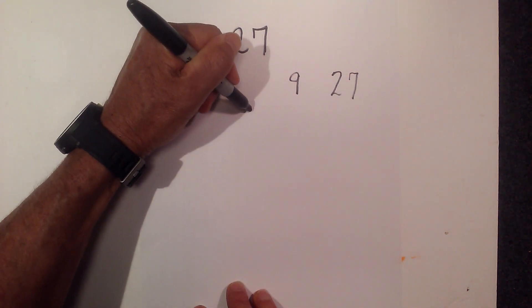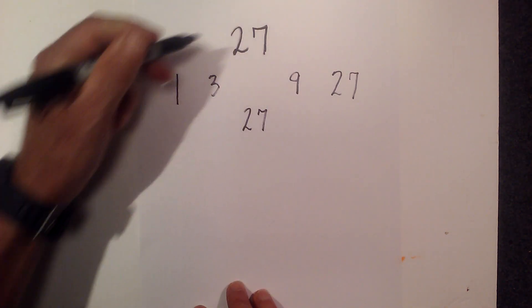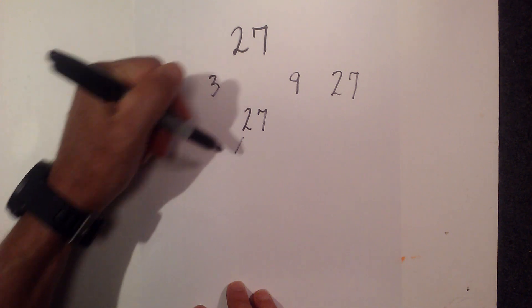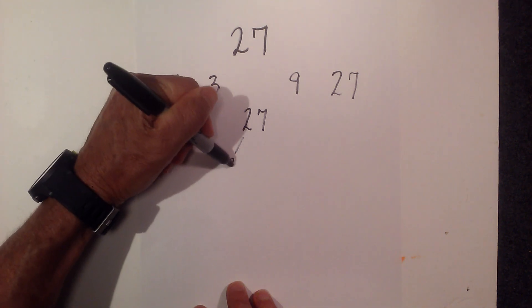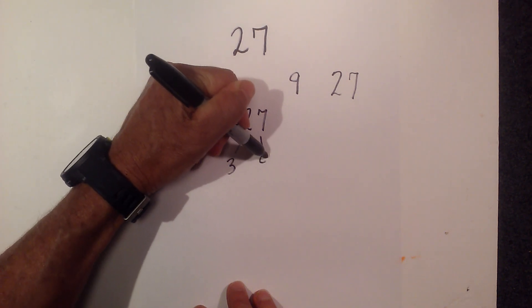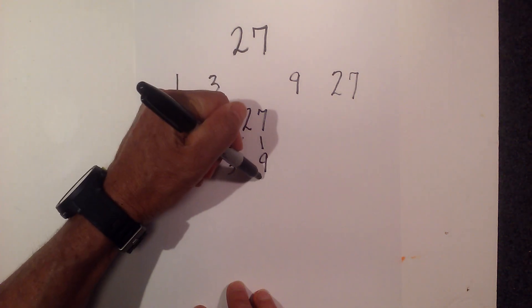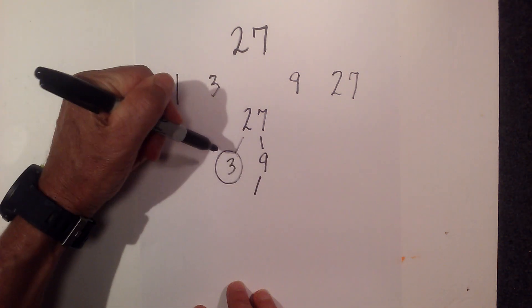Now let's find the prime numbers that multiply together to equal 27. I can't start with 2 but I can start with 3. So 3 times 9 equals 27. Circle the 3 because it is prime.